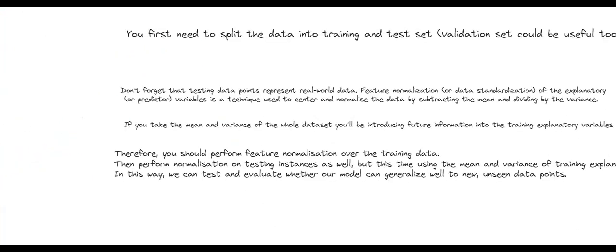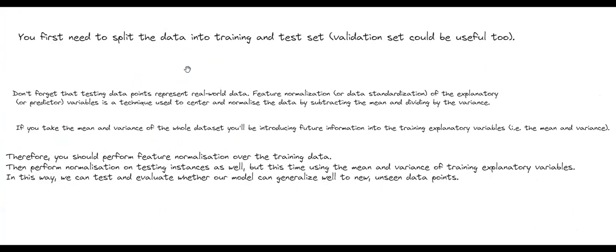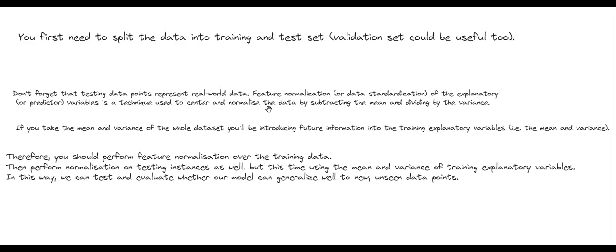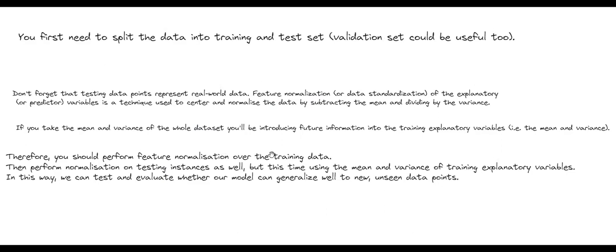To understand this theoretically, here are the notes: you first need to split the data into training and testing set. Don't forget that testing data points represent your real world data. Feature normalization or data standardization is a technique used to center and normalize the data by subtracting the mean and dividing by variance. If you take the mean and variance of your whole dataset, you will be introducing future information into your training variables. Your mean and variance should be only of your training split; therefore you should perform feature normalization only over your training data.